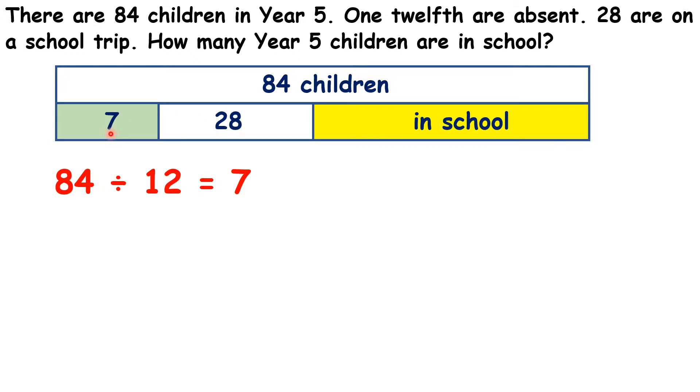So we have 7 children absent and 28 on a trip, so that means that 35 children are not in school.